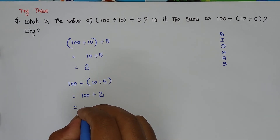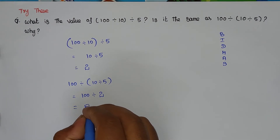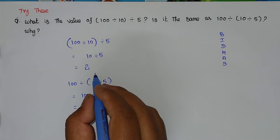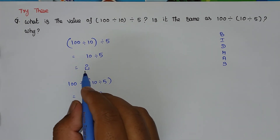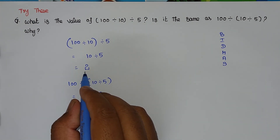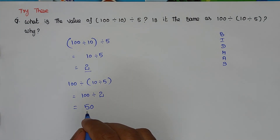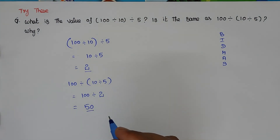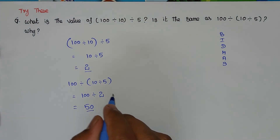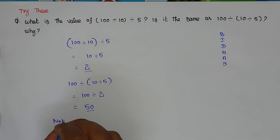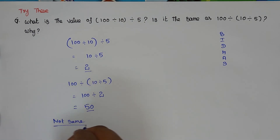100 divided by 2 equals 50. So when we simplify the first expression, the value is 2. When we simplify the second expression, the value is 50. So both are not the same — not same.